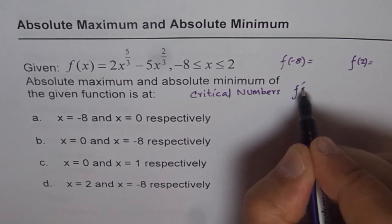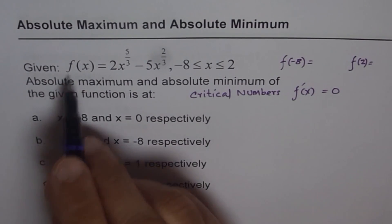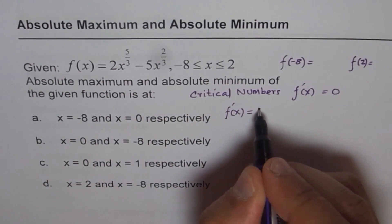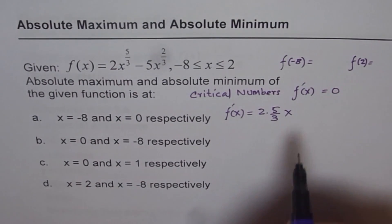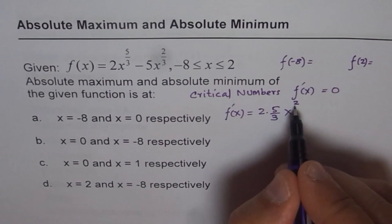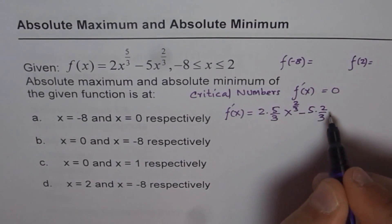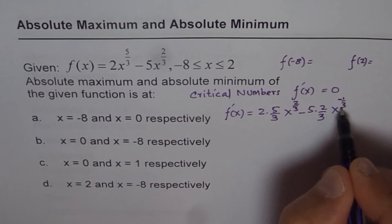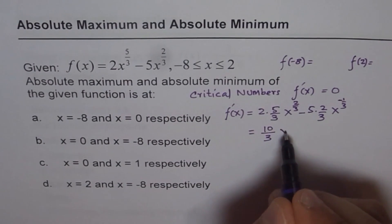We set f'(x) = 0 to find the critical numbers. The derivative f'(x) equals 2 times (5/3) x^(5/3 minus 1), which gives us (10/3)x^(2/3 minus 1), minus 5 times (2/3) x^(2/3 minus 1), which gives minus (10/3)x^(minus 1/3).